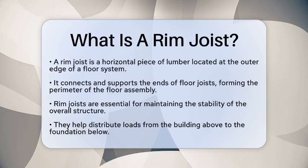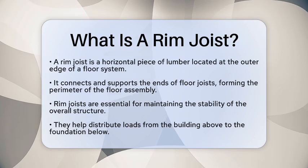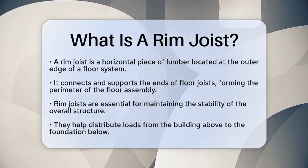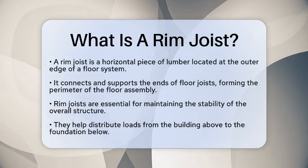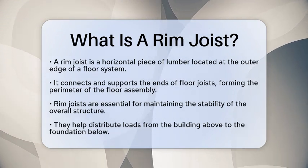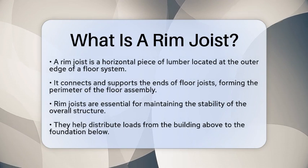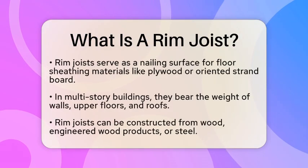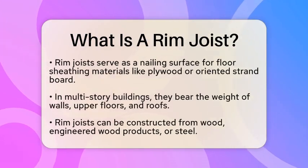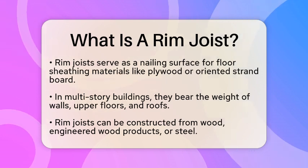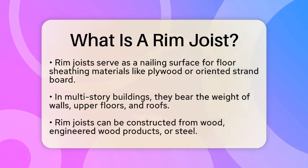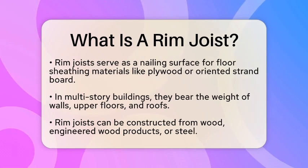In structural engineering, Rim Joists play a significant role in distributing loads from the building above to the foundation below. They serve as a nailing surface for the edges of the floor sheathing, which is often made from materials like plywood or oriented strand board. In multi-story buildings, Rim Joists bear the weight of walls, upper floors, and roofs, working together with floor joists to ensure the building remains stable.